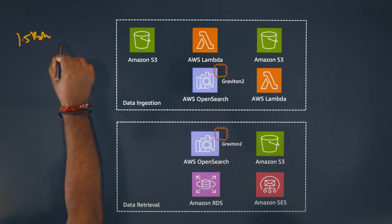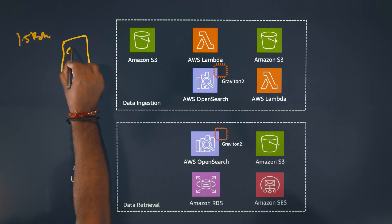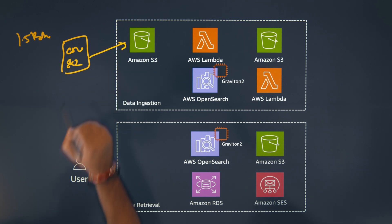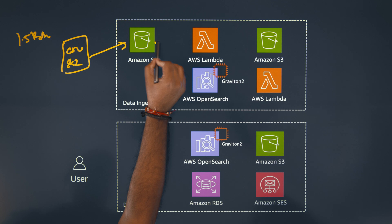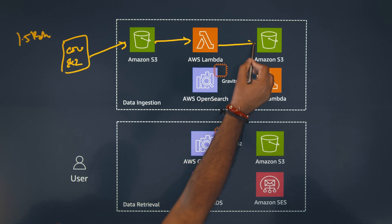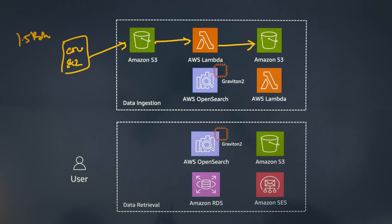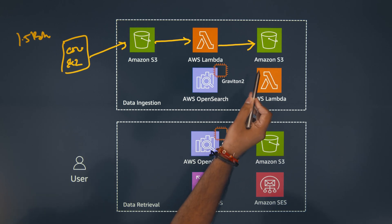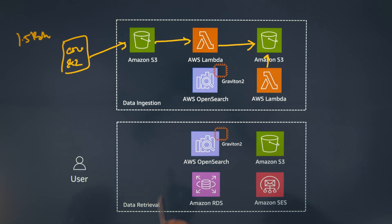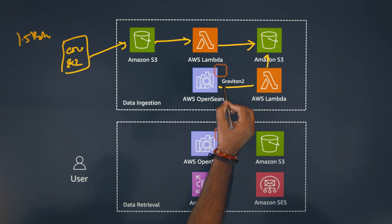The raw data, which is in the format of CSV or Excel files, gets uploaded into S3 buckets. Then a Lambda function gets triggered to validate this data. If there is any discrepancy within the data, it gets highlighted. Otherwise, a copy of the validated data gets uploaded into a different folder within the S3 bucket. Once we have the validated copy, Lambda gets triggered again to process this validated data and ingest it into the OpenSearch cluster.